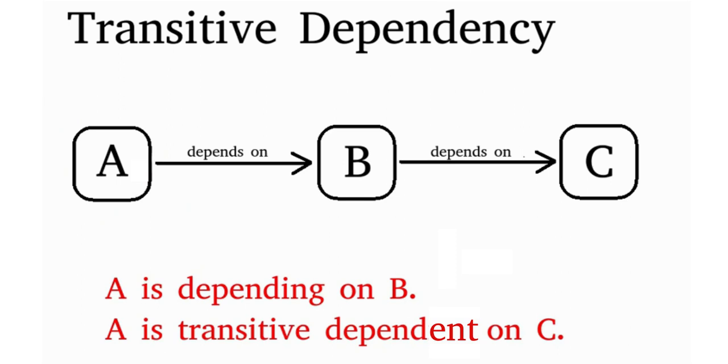Hello, what is transitive dependency? Imagine you have something A — a module A or whatever A — and that depends on B, and B depends on C.